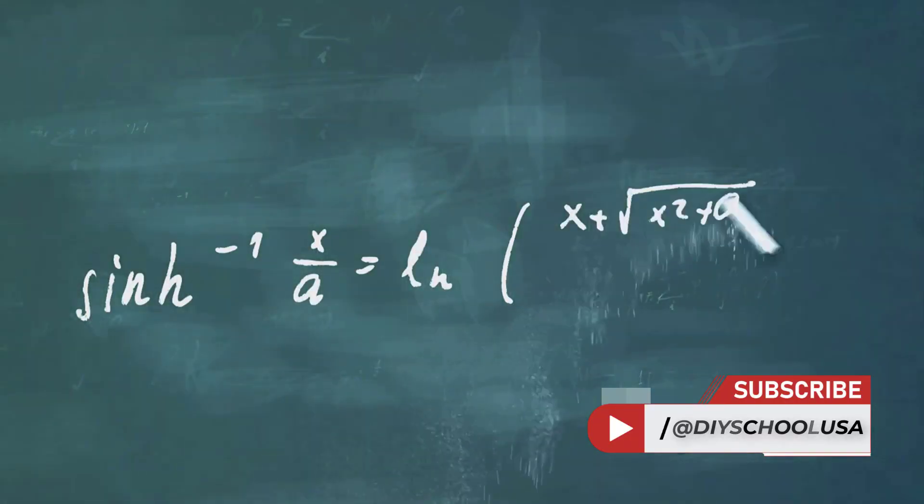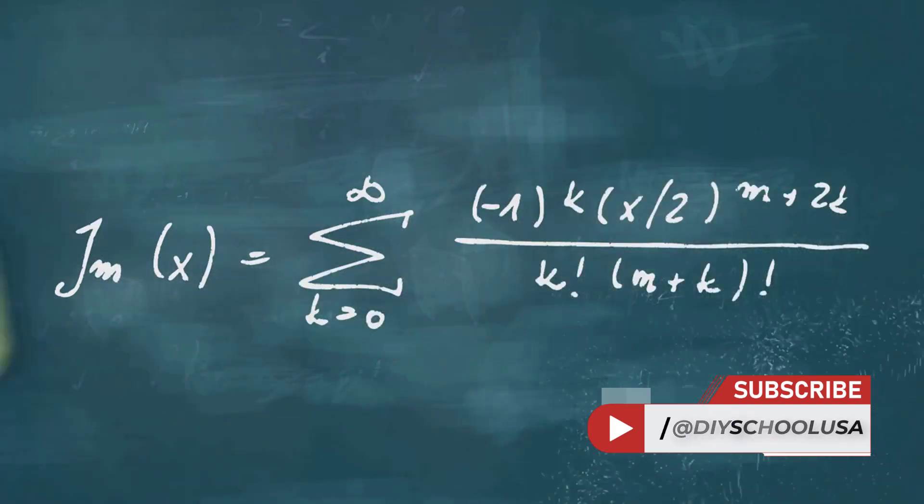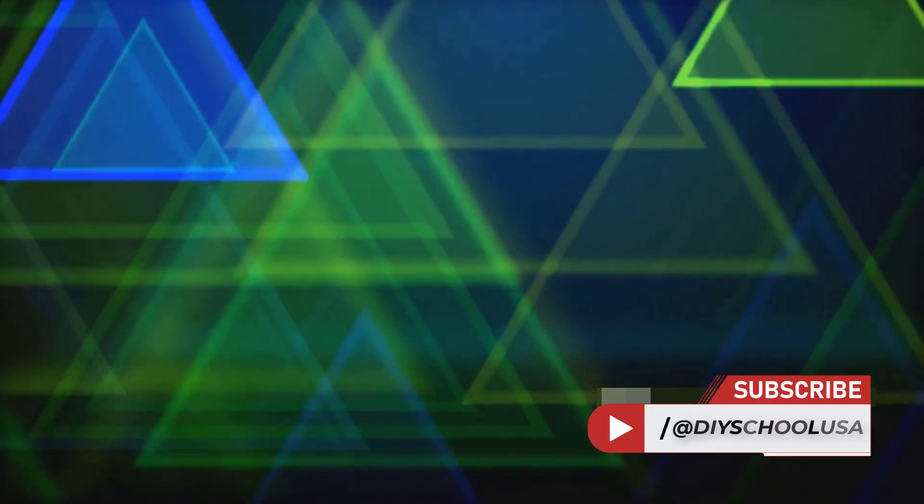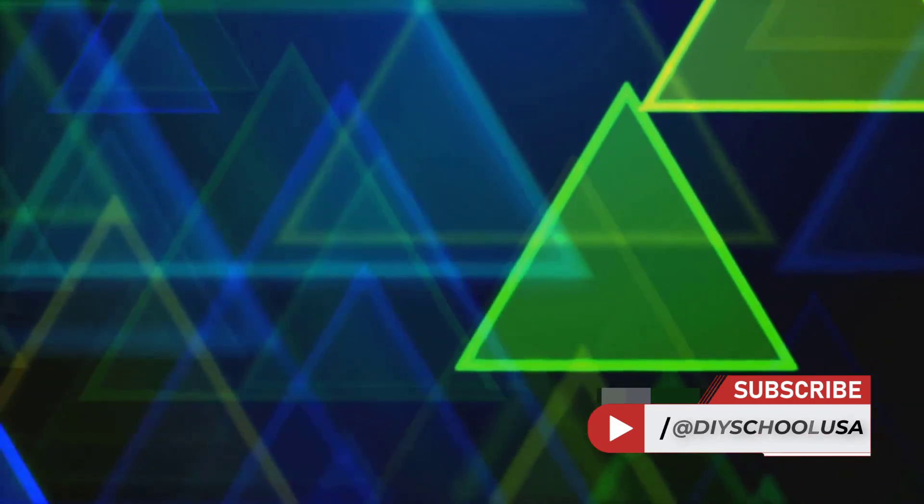The Babylonians also made significant strides in the calculation of triangles. They developed a list of Pythagorean triples, as evidenced by the Plimpton 322 tablet. A Pythagorean triple consists of three positive integers, a, b, and c.